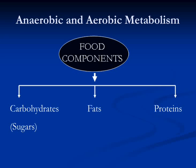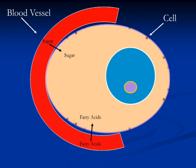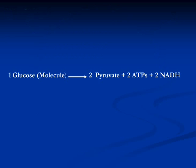Fats are broken down into fatty acids and proteins are broken down into amino acids, which are the building blocks of proteins. We will discuss metabolism of sugars and fatty acids here. These two food components pass through the plasma membrane, or cell membrane, and enter the cytosol. Cytosol is the fluid component of cytoplasm, defined as everything between the nucleus and cell membrane, and is also known as hyaloplasm.